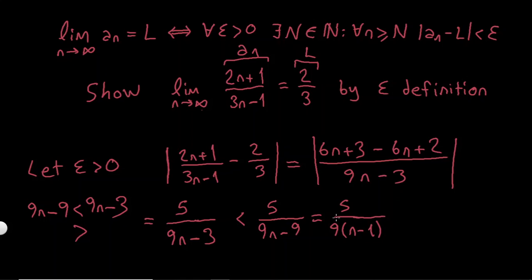Here I can directly try to find this N, but let's do one more step. So I know that 5/9 is less than 1, so I can just write 1 instead of 5/9. 1 over n-1, which is 1 over n-1.